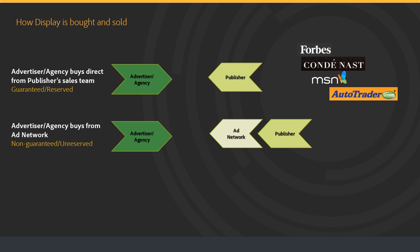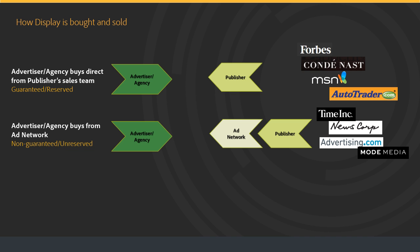The second common way display is bought and sold is an advertiser or agency buys from an ad network. An ad network consolidates or aggregates inventory from various publishers, packaging that inventory in different ways — by audience, by vertical, contextually, or by pricing model such as CPM, CPC, or CPA. The ad network sells the inventory to the agency or advertisers. It is indirect sold and the inventory is typically non-guaranteed. Examples of ad networks include the Microsoft Media Network, Yahoo Network, Time's network which includes Sports Illustrated and Time Magazine, News Corp's ad exchange including Wall Street Journal, and Advertising.com, which is AOL's ad network.